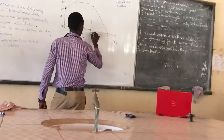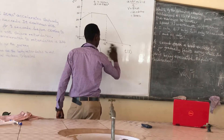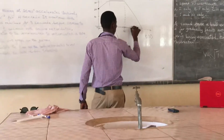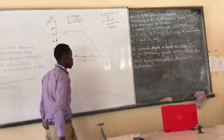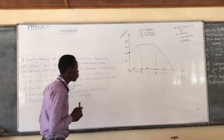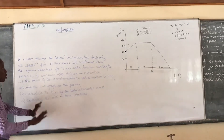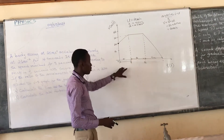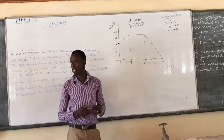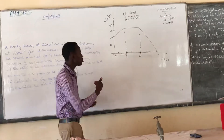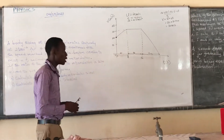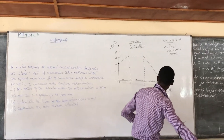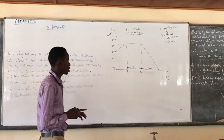The body is brought to rest in t seconds — an unknown time — during the retardation phase. This is the third interval, and we call it t seconds. On the VT graph, remember that the slope represents the acceleration, while the area under the graph represents the distance traveled.